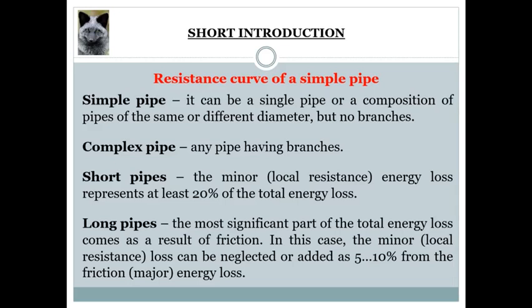Long pipes are those where the most significant part of the total energy loss comes as a result of friction. In this case, the minor energy loss can be neglected or just added as a percentage in the range of 5 to 10% from the friction or also called major energy loss.